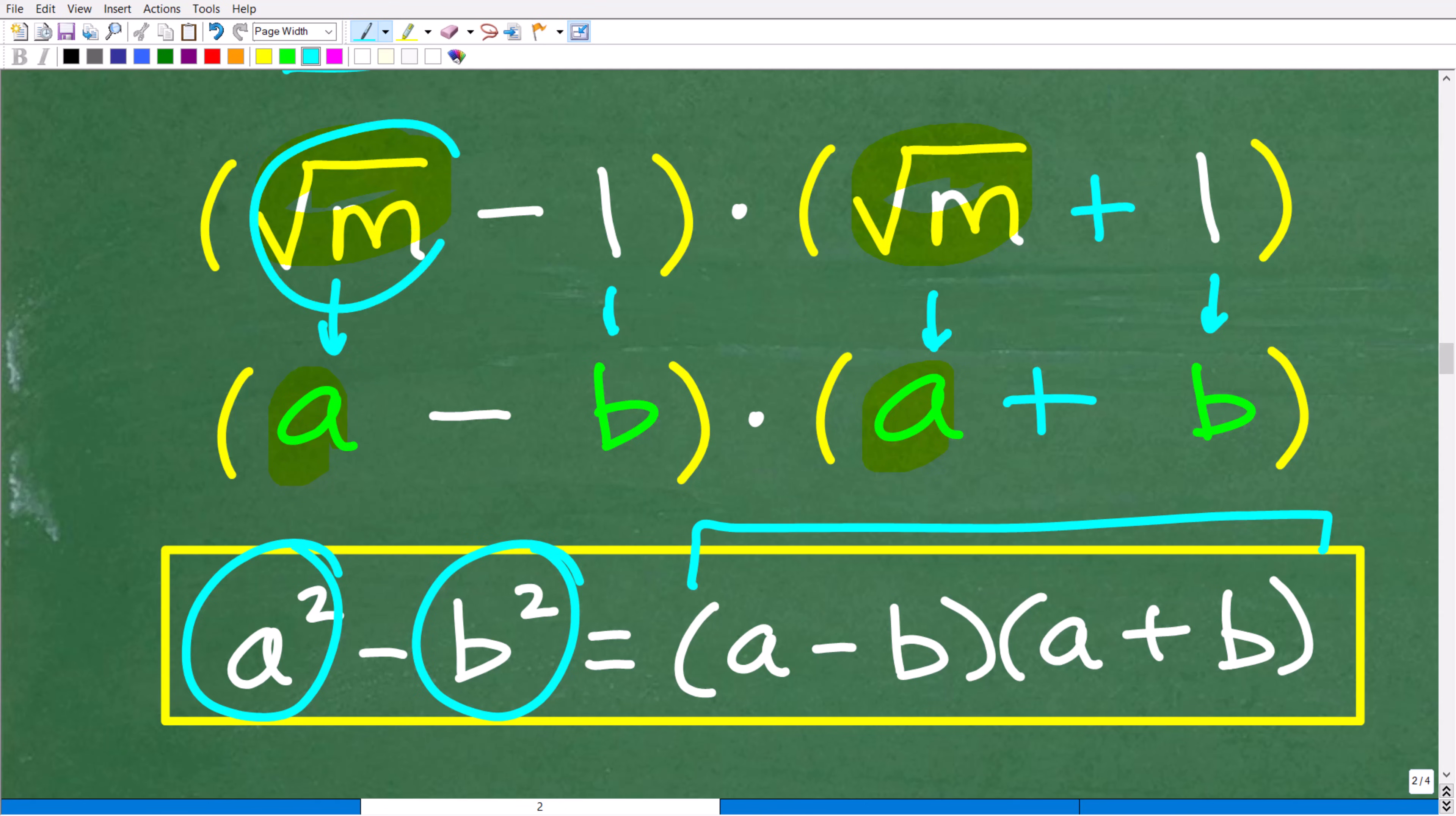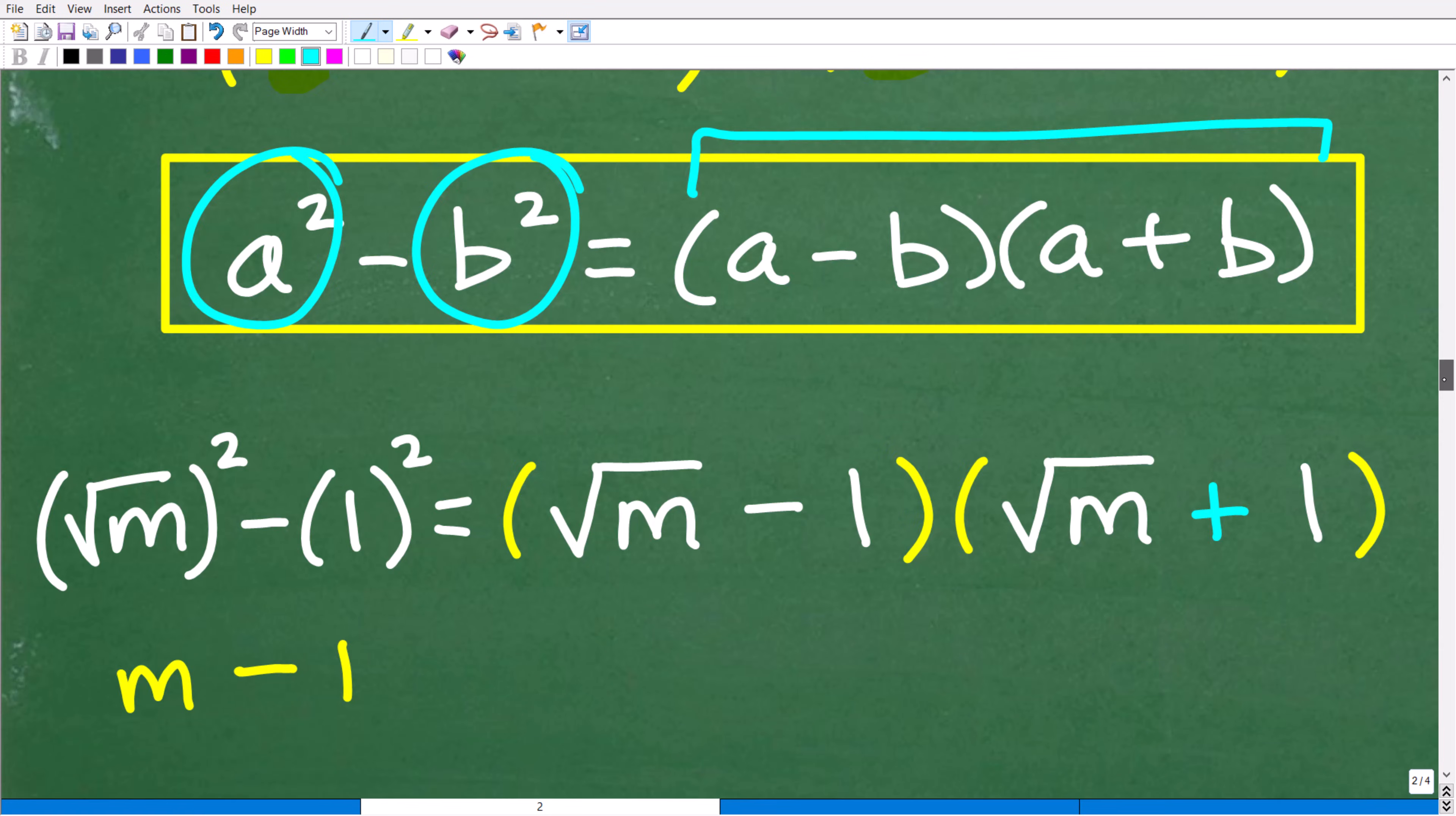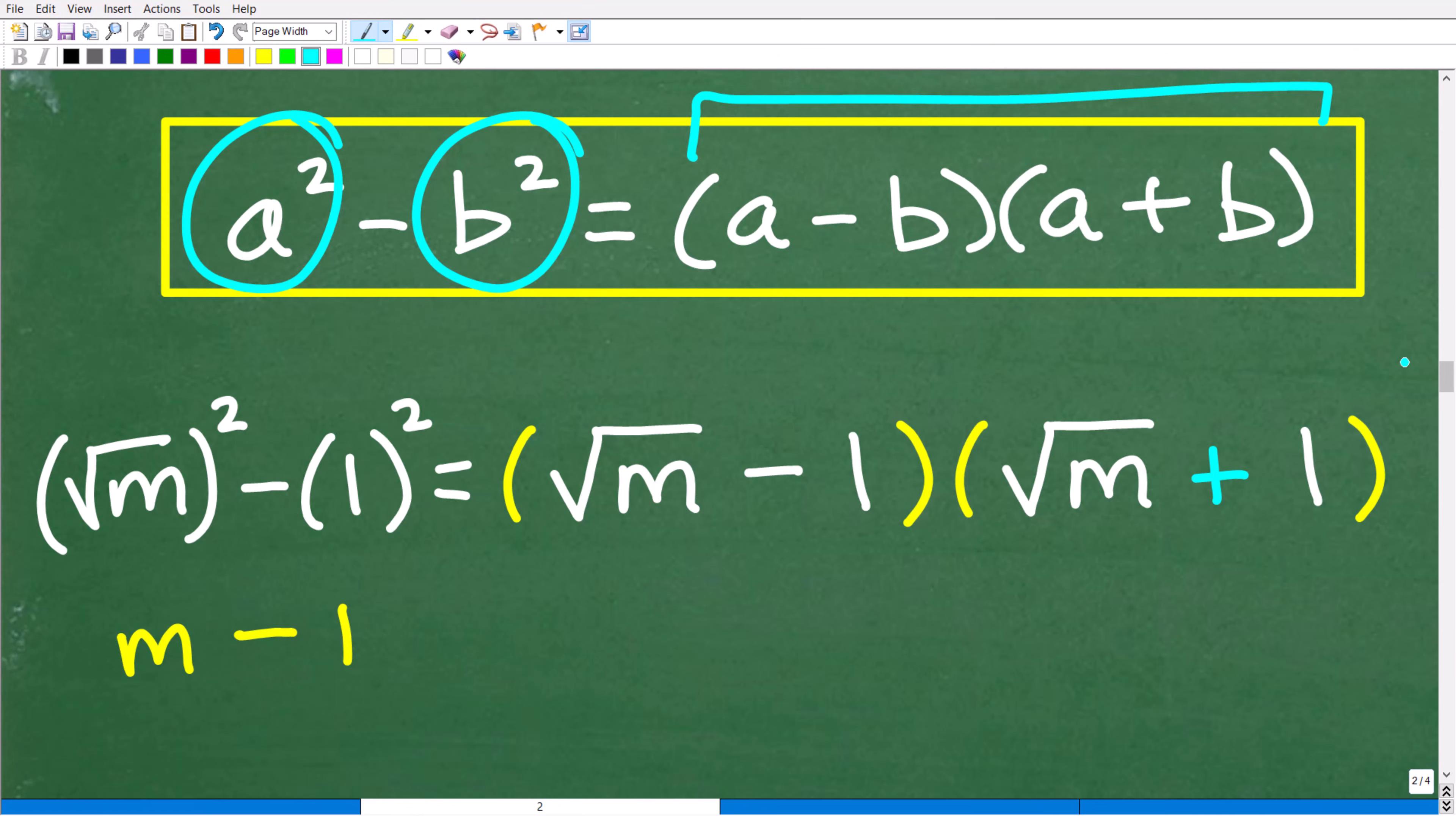So if the square root of m is a and one is b, if we square these two things, we will indeed actually have done basically the multiplication. So a squared minus b squared, this would be the square root of m squared minus 1 squared. The square root of m squared is m, and 1 squared is 1. So our multiplication here, all this product, is just basically m minus 1.